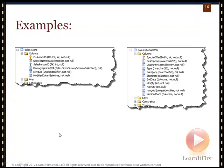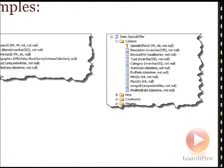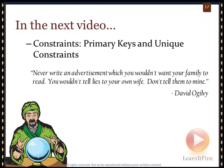Looking at a couple of sample database examples: one shows a UNIQUEIDENTIFIER column for a row GUID, and ModifiedDate still uses the old DATETIME — no problem with that. Another example shows SMALLMONEY and a few more DATETIME columns. There are actually no SMALLDATETIMEs in those samples. That wraps up data types — we still have three more videos on basic fundamental table design, starting with constraints in the next video.